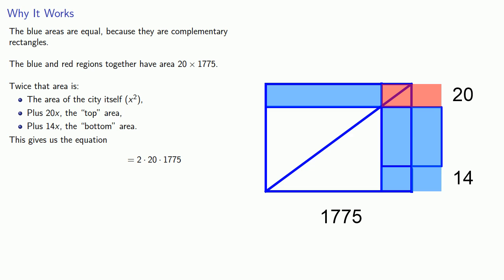2 times 20 times 1775, that's the city, plus the top area, plus the bottom area, and there's the equation we need to solve to find the length of one side of the city.